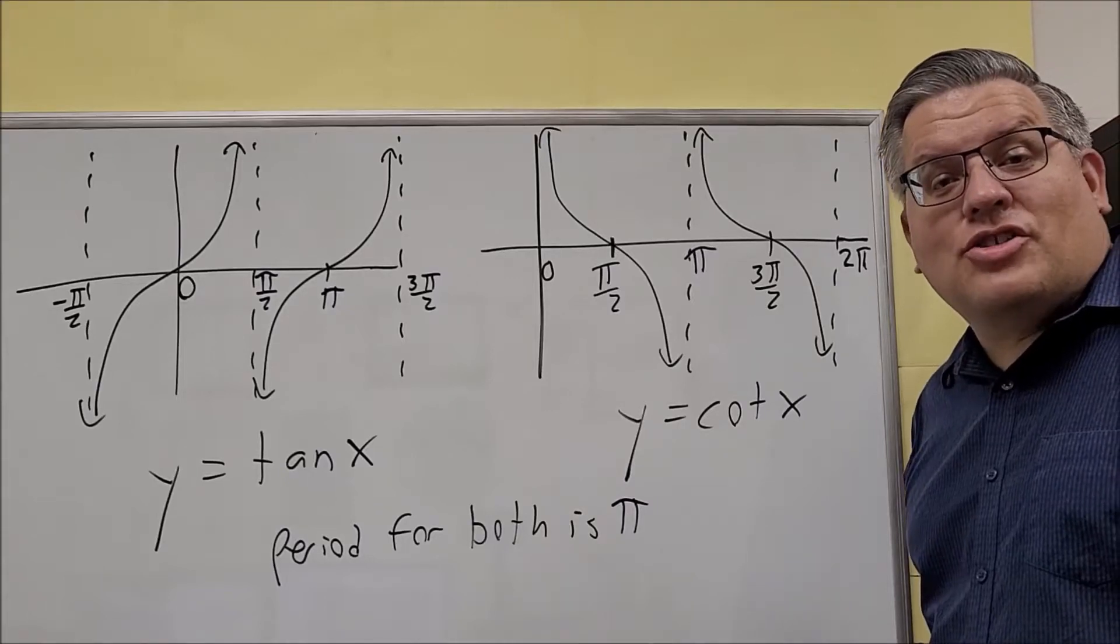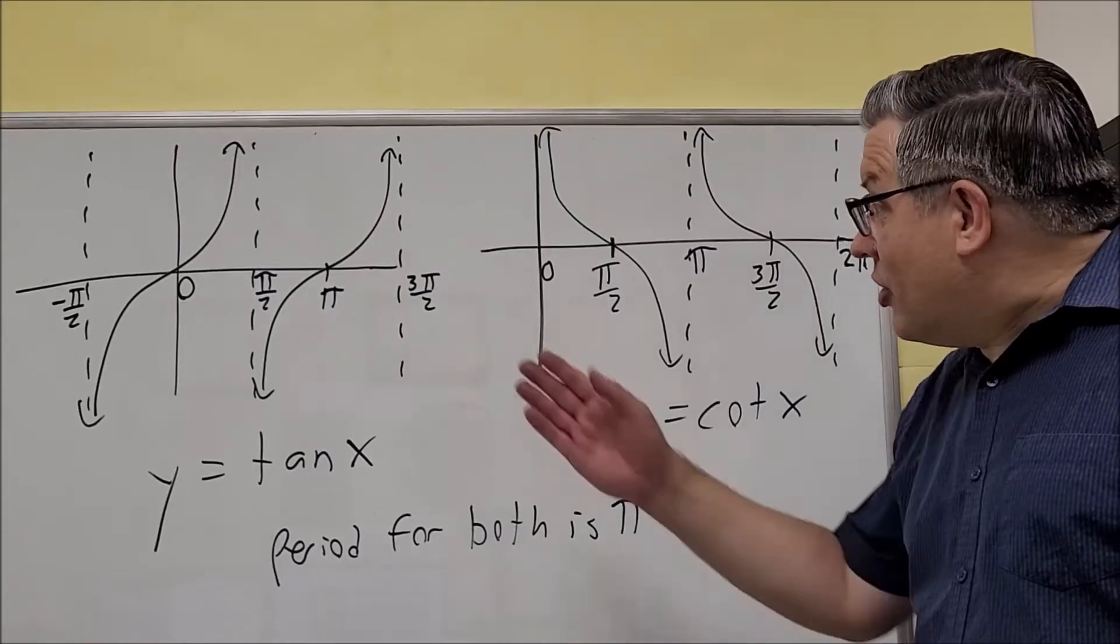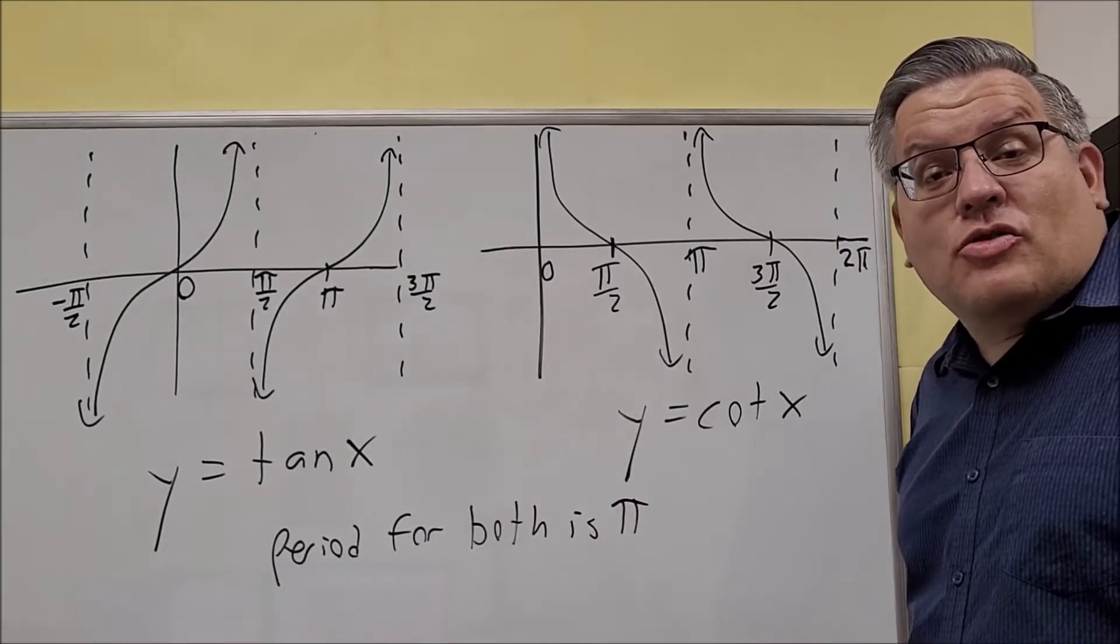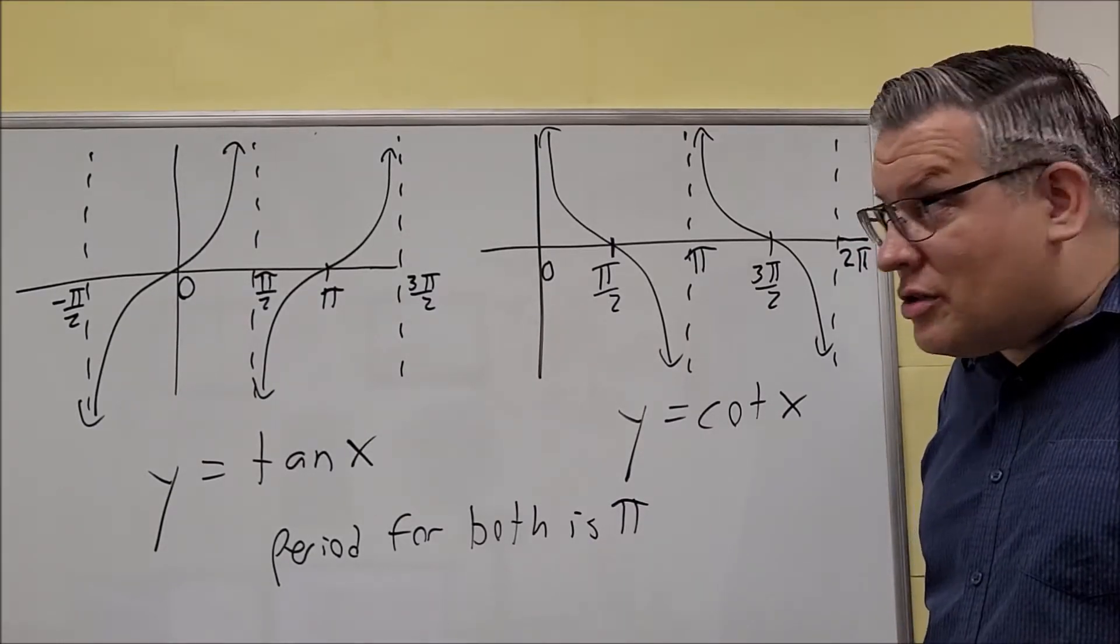Next, we're going to take a look at tangent and cotangent graphs. As you can see, these are very different from the sine and cosine graphs, secant and cosecant.